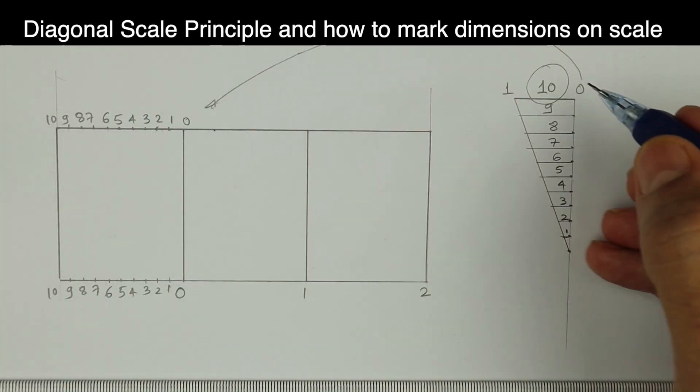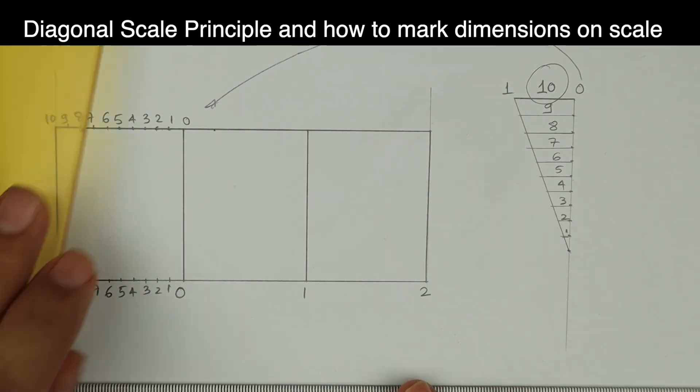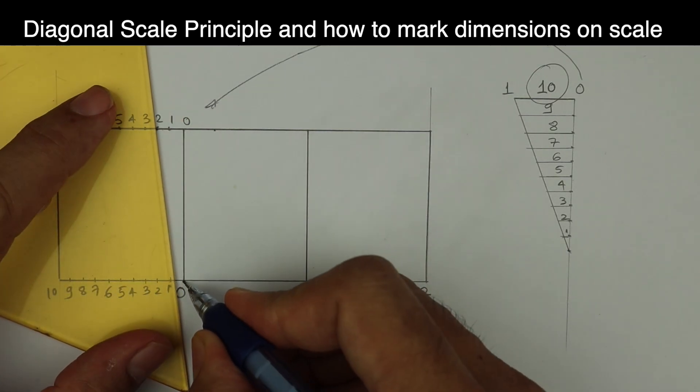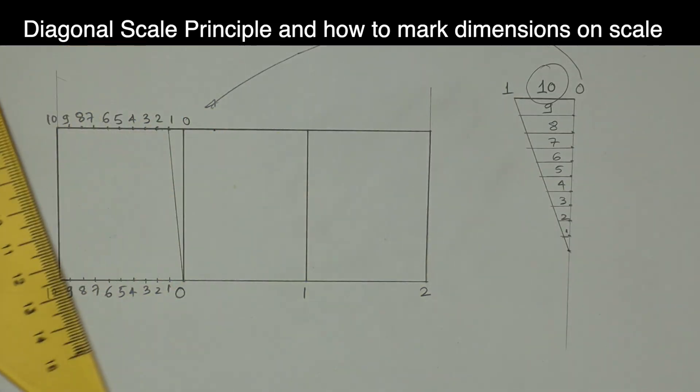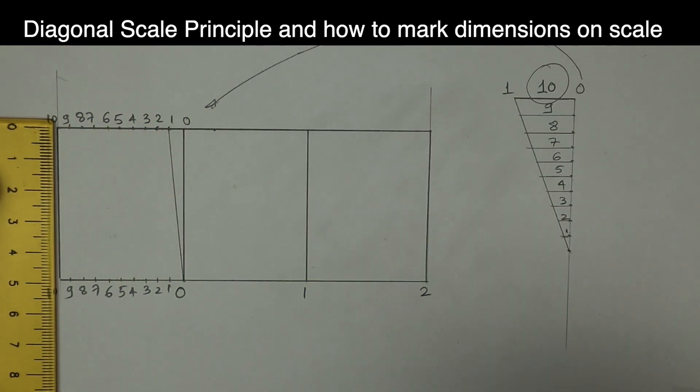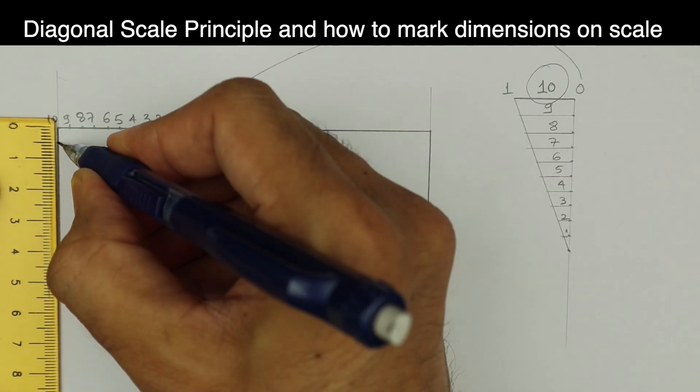This is here, 1 is here. So what I will do in diagonal scale, will join 0 to 1, 0 to 1. See this. And I'll divide this vertical line into 10 equal parts.